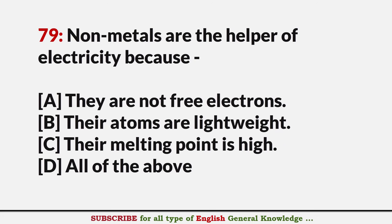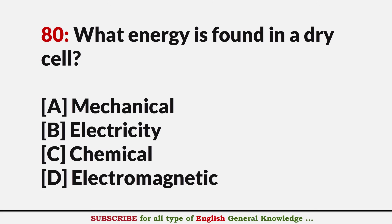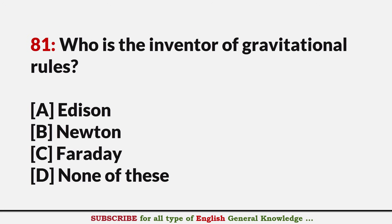Non-metals are poor conductors of electricity because? Answer A: They have no free electrons. What energy is found in a dry cell? Answer C: Chemical energy. Who is the inventor of the law of gravitation? Answer B: Newton.